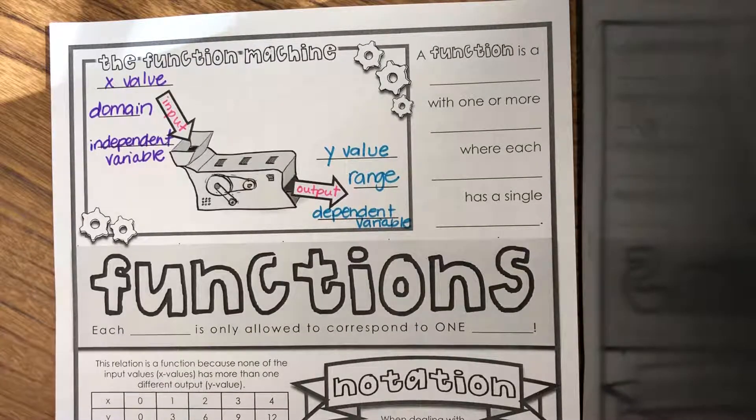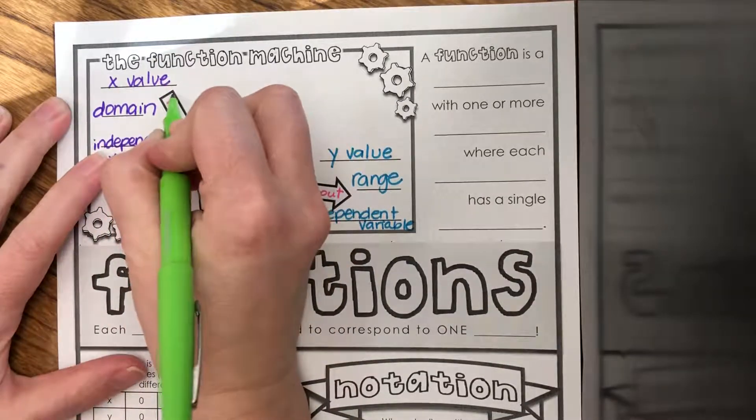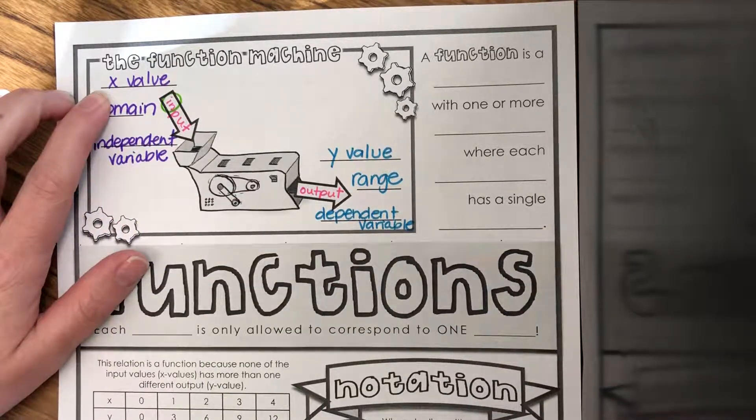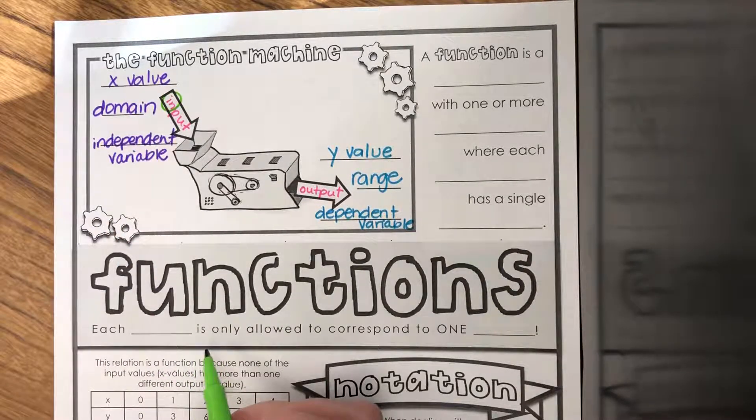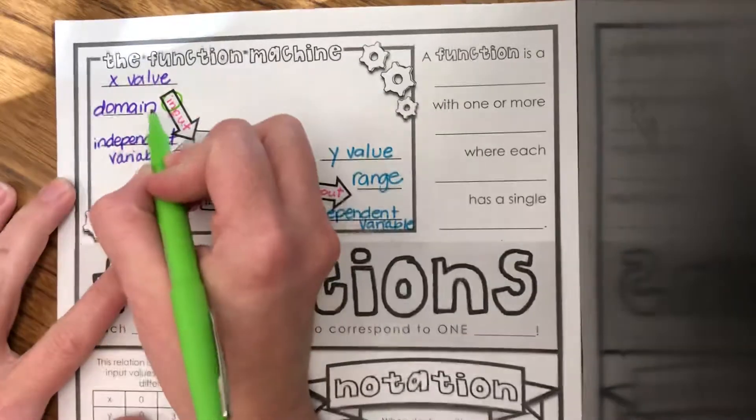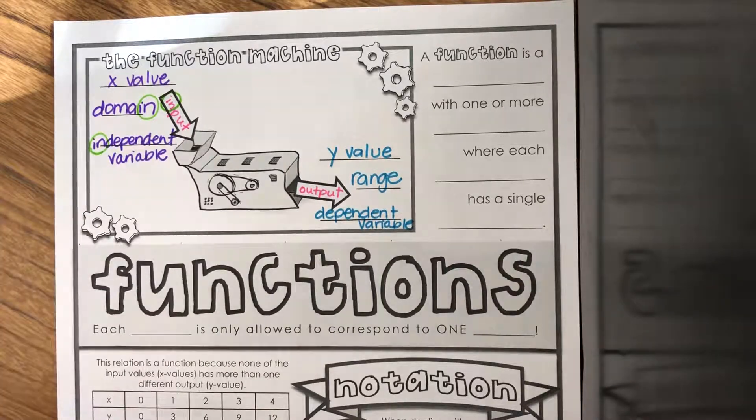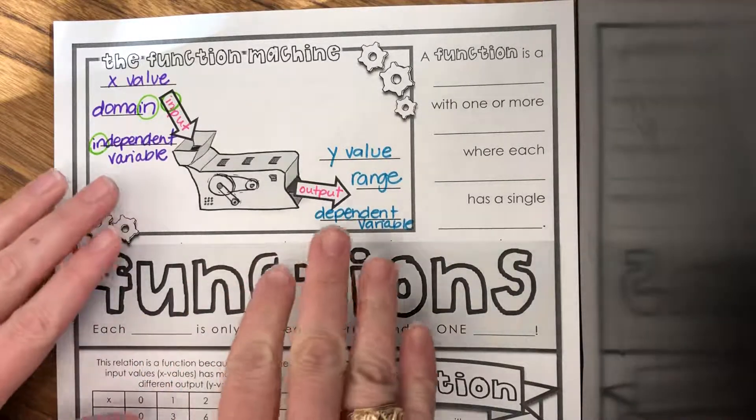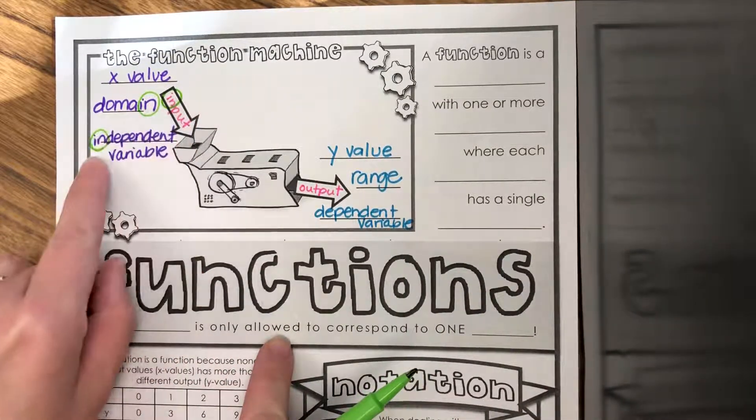One thing I like to point out here, a former student actually pointed this out to me, is that all the inputs except for X value have an I in them. Input starts with I, it's going in, domain has an I in it, and independent variable has an I in it. So it can help you remember your labels and not get them confused with each other.